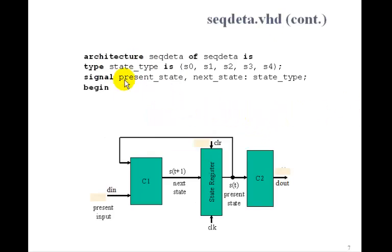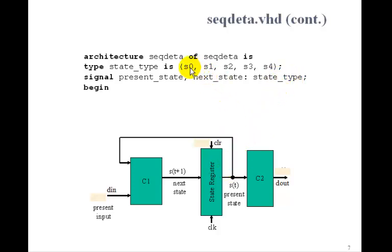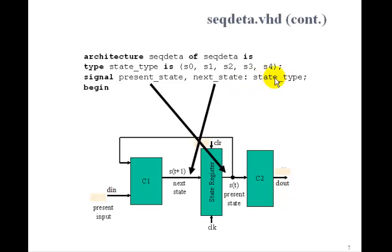The first thing we do is define our states. We do that with a type statement in the architecture. We call it state_type, and we'll list them S0, S1, S2, S3, S4. So we'll just label them S0 through S4 instead of the original state names. Then we'll define two signals — the present state and the next state — as type state_type. These are enumerated types, so we don't have to worry about how they're implemented, whether they're binary or one-hot.